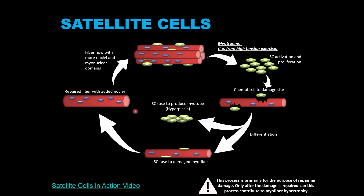In summary, during resistance training satellite cells can become active in response to mechanical stress imposed by lifting weights, and they can donate their nucleus to the muscle fiber. This adds more myonuclei to the fiber and thereby more myonuclear domains, which increases the capacity for the muscle fiber to hypertrophy via myofibrillar protein synthesis. If you click on the link provided, you can see satellite cells activated in real time via an electron microscope.